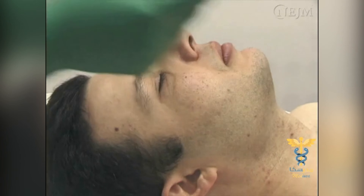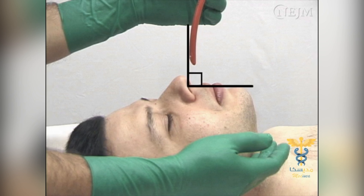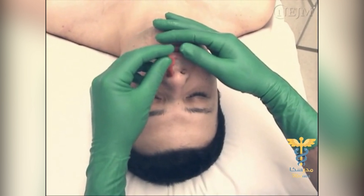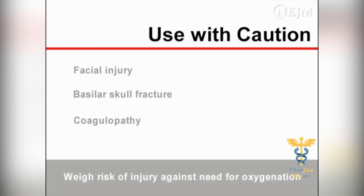Regardless of the technique used to ventilate the patient with a face mask, adequate ventilation can be assessed by inspecting and auscultating the chest and abdomen. The chest rising and falling, and breath sounds synchronous with the delivered tidal volume suggest adequate ventilation. Gurgling epigastric sounds and tympanic abdominal distension indicate gastric insufflation and poor ventilation. Other monitoring tools such as pulse oximeter and a carbon dioxide detector can be very valuable.